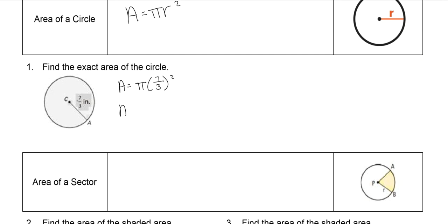Whenever you square a fraction, you square both the top and the bottom, which means that this is 49/9 π inches squared. This is area, so squared. That's the exact answer.